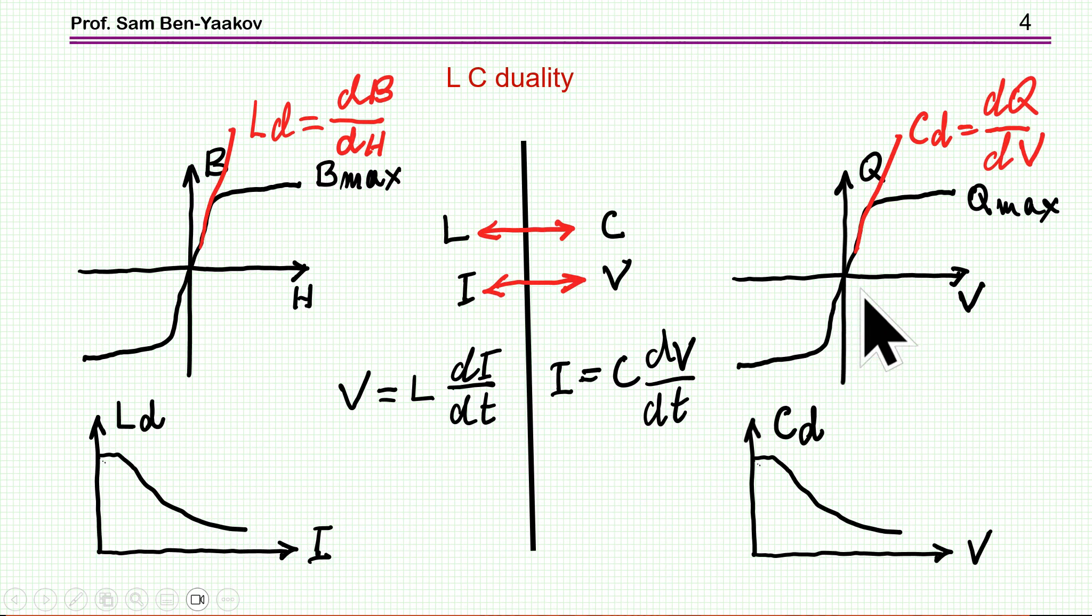And the dual case will look like that. We have QV plot here. Here we have nonlinear case in which the Q goes sort of into saturation. The local derivative is the small signal capacitance. And this is something that you see in the datasheet as the small signal capacitance as a function of the voltage, the bias voltage. So this is very well known. So the idea is to use the flux gate current sensor concept, which is based on this, for this case.